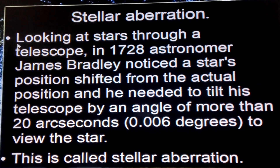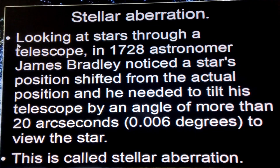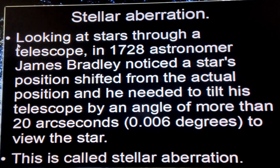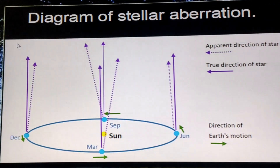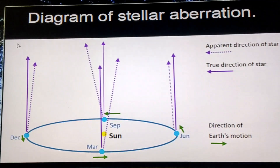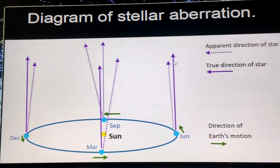It was 1728 when astronomer James Bradley noticed that a star's position shifted from its actual position year-round, depending on where the earth was and the motion it had. To correct for that, it was necessary to tilt the telescope by about 0.006 degrees. He called this stellar aberration.